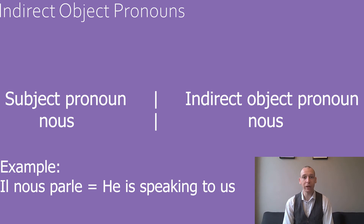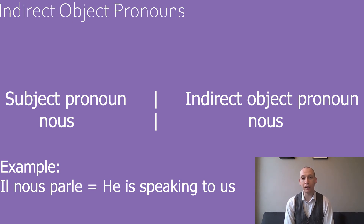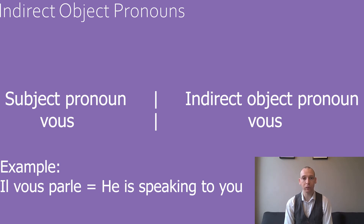The indirect pronoun for nous is nous. This is the same as the subject pronoun and the direct object pronoun. For example, il nous parle — he is speaking to us. The same is true for vous: il vous parle — he is speaking to you.